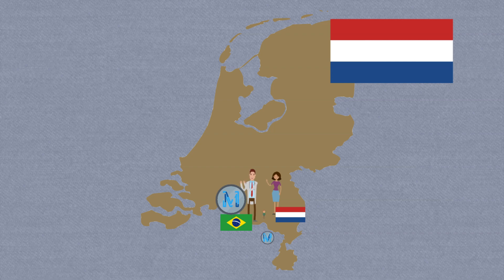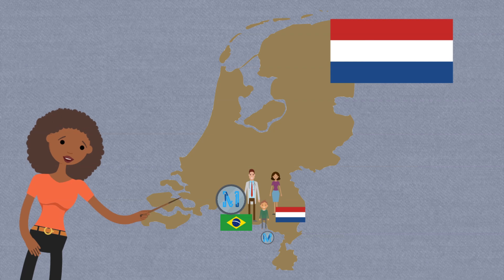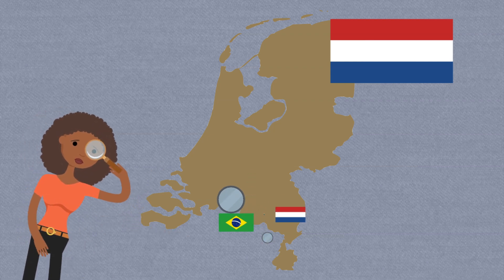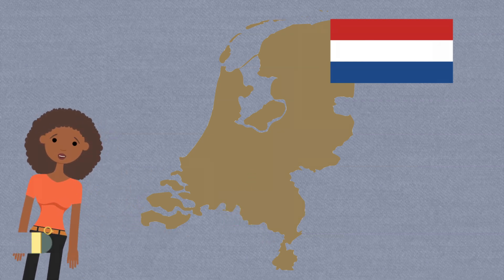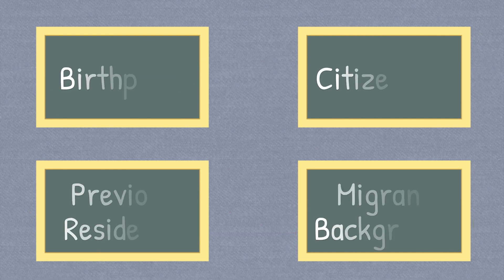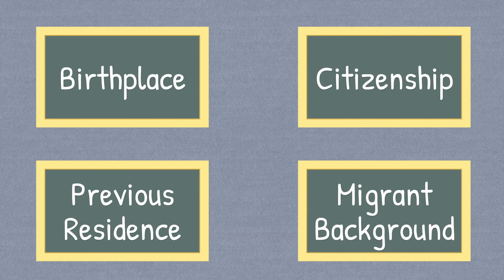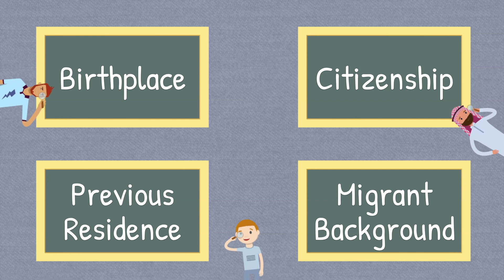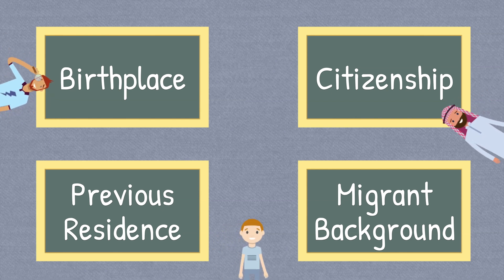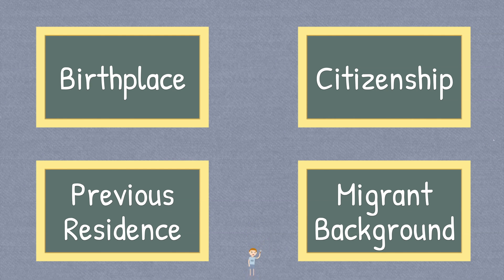These classifications are up to each country, which makes it hard to compare numbers that different countries collect. So that's four options for collecting migration data. We can see how statistics about stocks and flows can look rather different depending on how migrants are defined and classified.